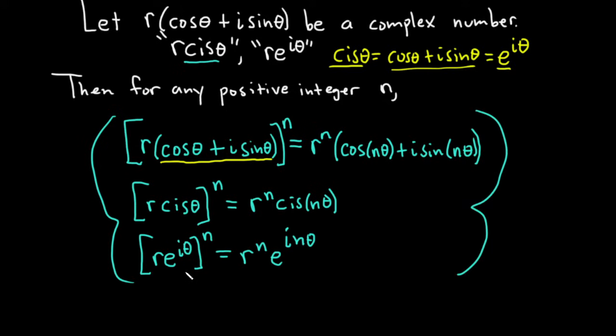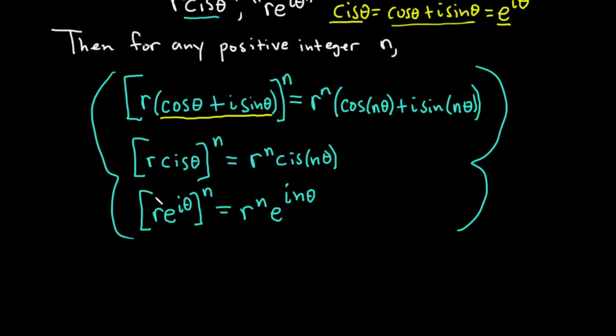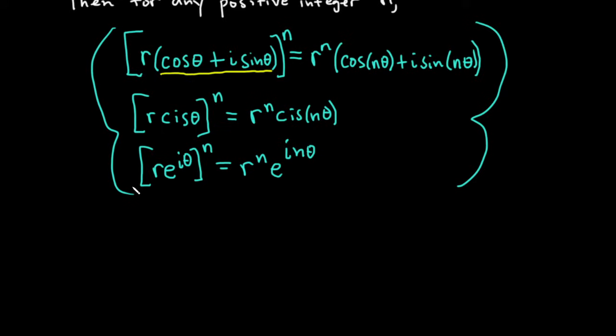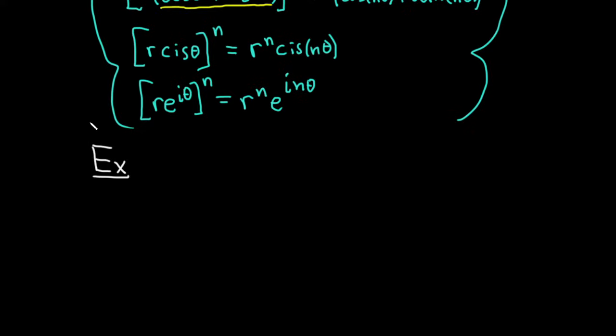So let's go ahead and just do a simple example of using De Moivre's theorem to raise a complex number to a power. And typically, when you do these, like in a classroom setting, they always say don't use a calculator, you know, do it by hand, show all your work. But it's pretty simple. So let's start maybe with this one. Say we have bracket three, parentheses, cosine three pi over four plus i sine three pi over four.